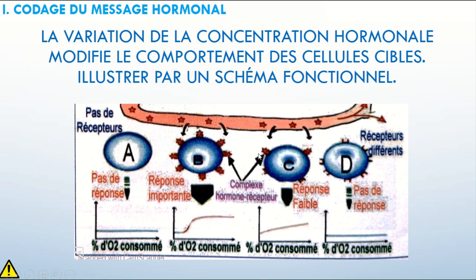Donc, le nombre de complexes hormones-récepteurs est différent entre B et C, ce qui aboutit à une réponse importante au niveau de B — je peux la dessiner par une flèche bien large. Par contre, la réponse au niveau de C est faible — je diminue la largeur de la flèche. Au niveau de A et D, il n'y a pas de réponse, donc pas de flèche.